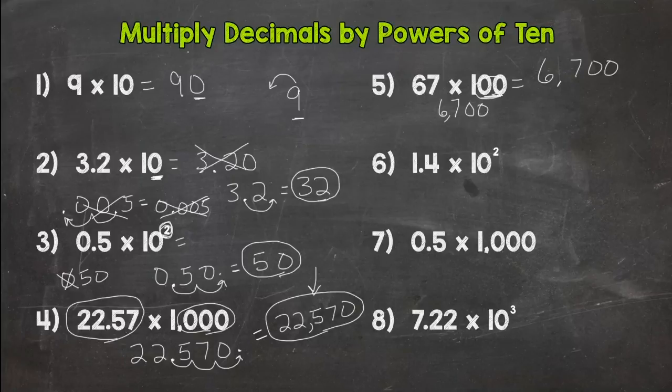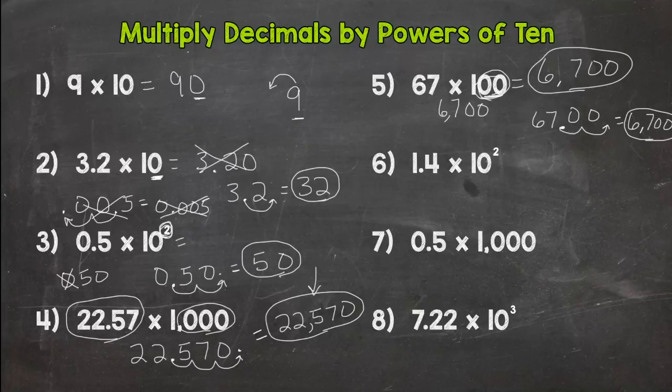I also want to show you the decimal method with this. Because where does the decimal go for a whole number? It comes after. So we could write 67 like this. And 100 has two 0s. So we can move the decimal two times. One, two. Fill with 0s. Look what we get. We get the same thing. 6,700 for that one.